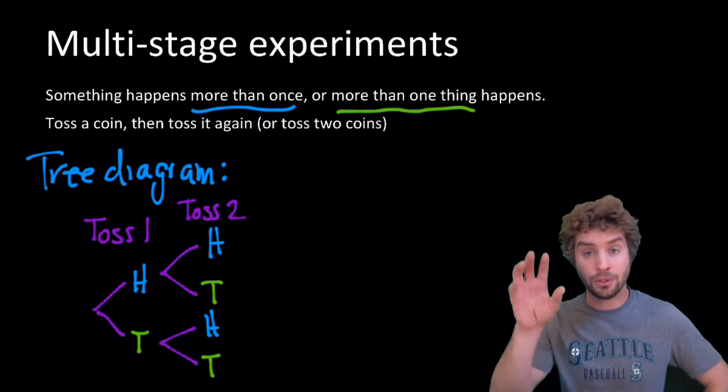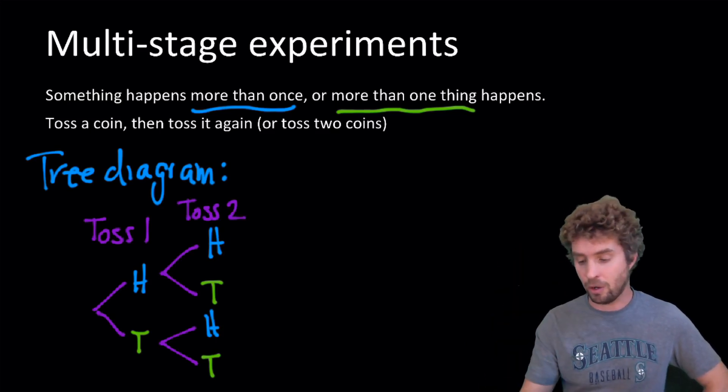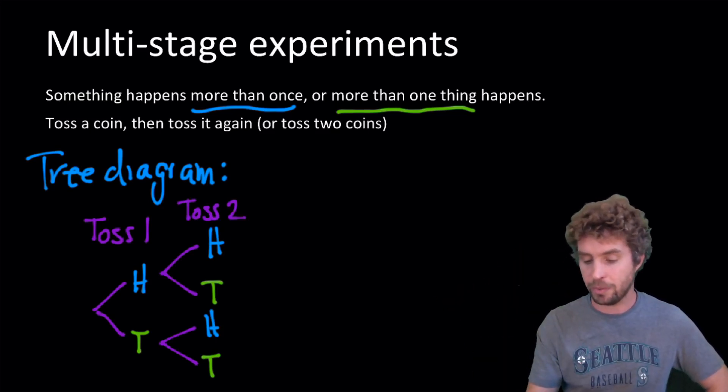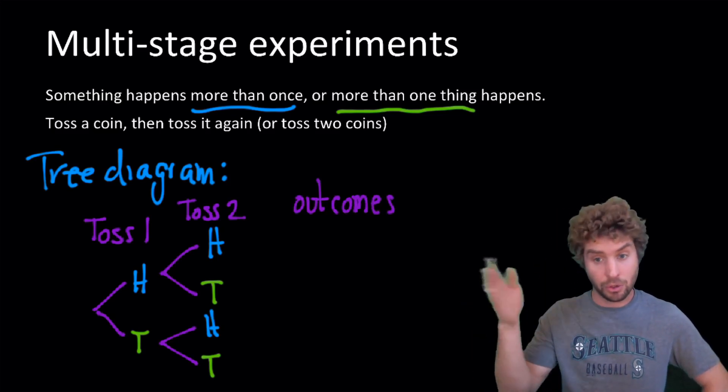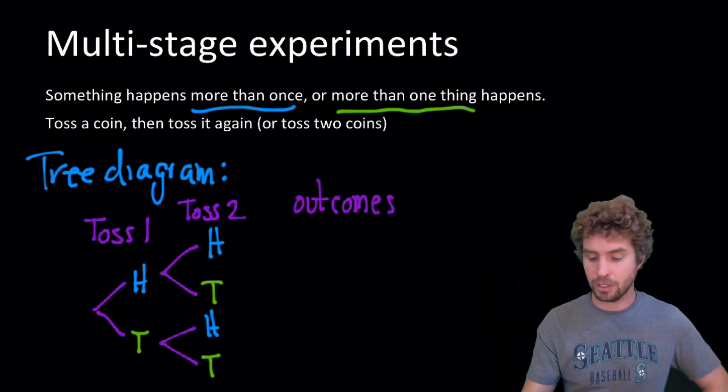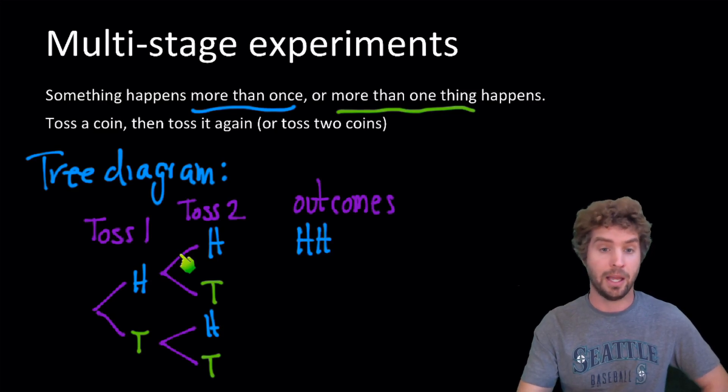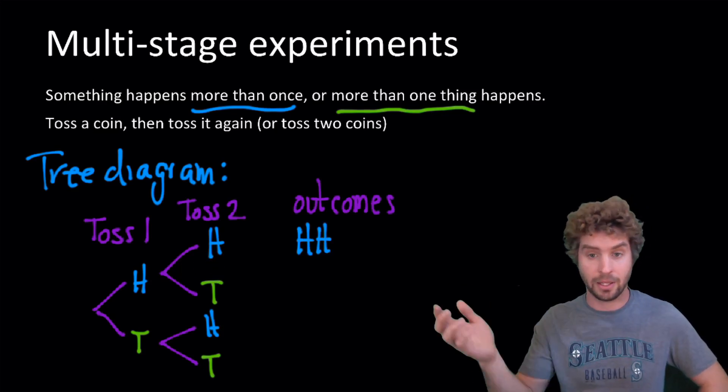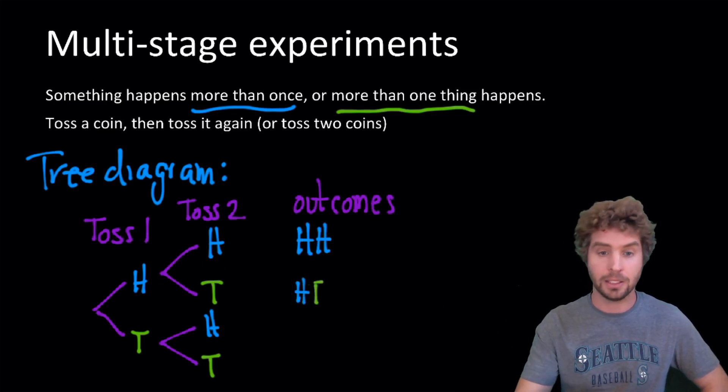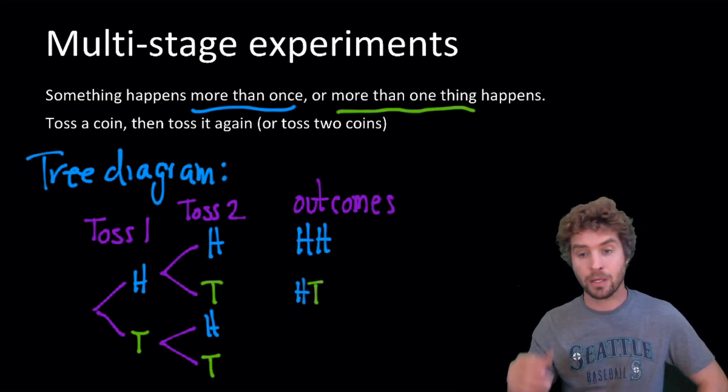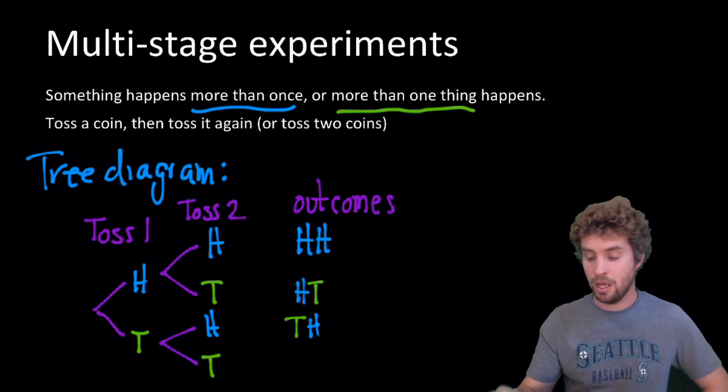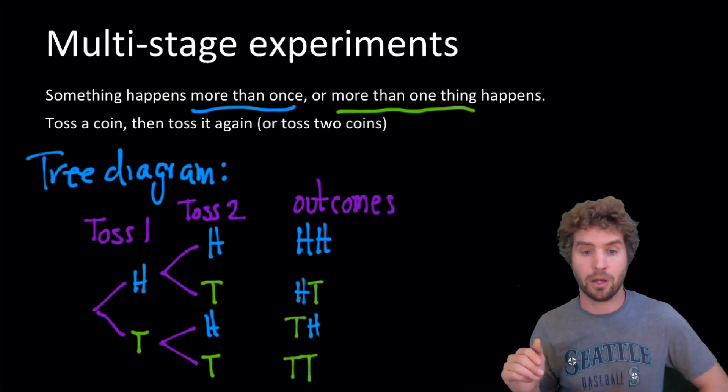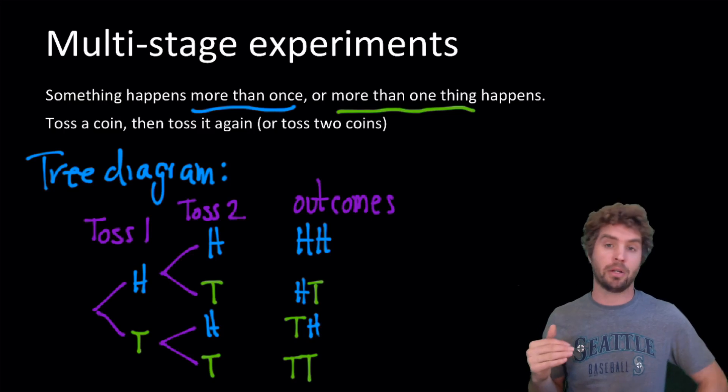And what we can then do is make a list of all the sequences of what can potentially happen. We can list all the outcomes of this two-step experiment. So, the first is that we have heads first, and then heads again on the second roll. Or we could go heads and then tails. Or we could start with tails and then heads. Or we could get tails both times. These are the four possible outcomes of our experiment.